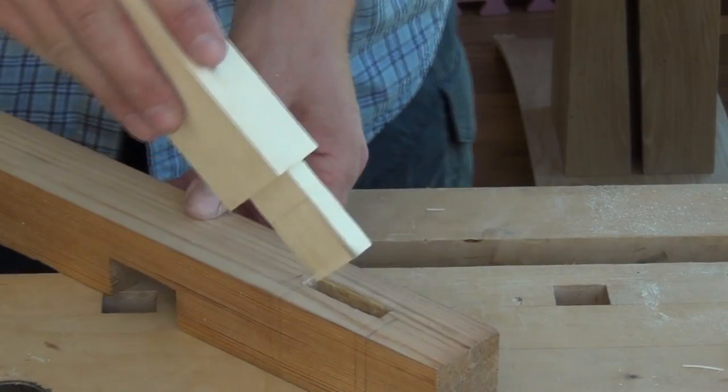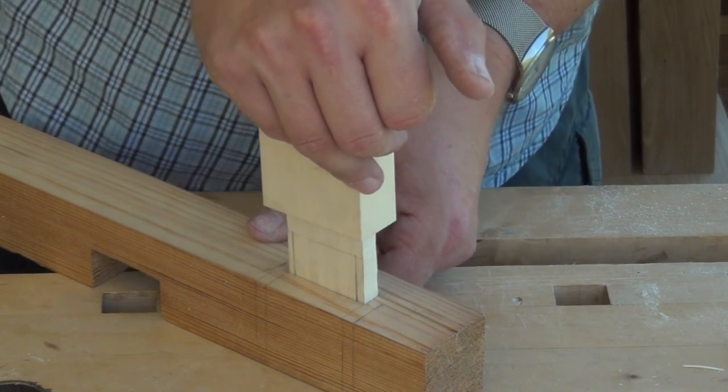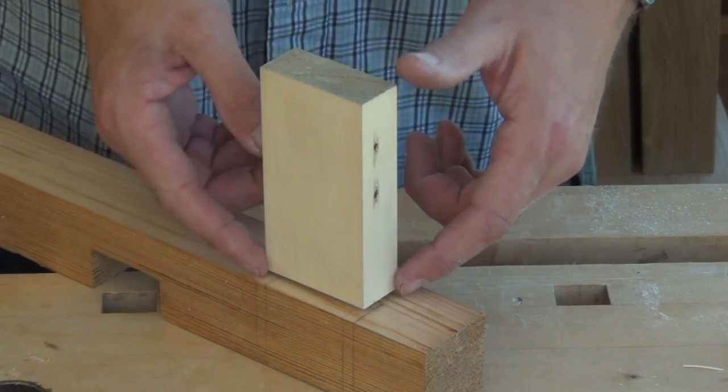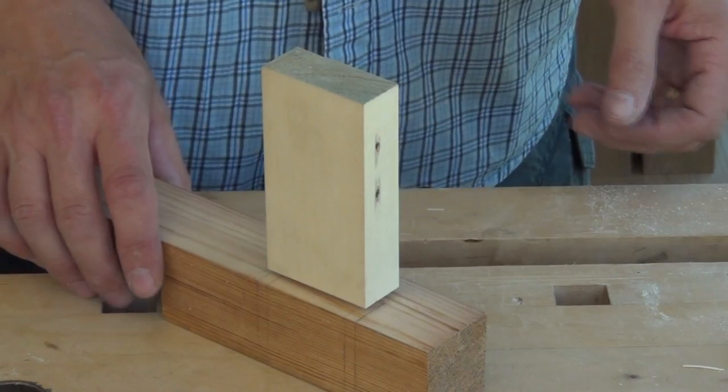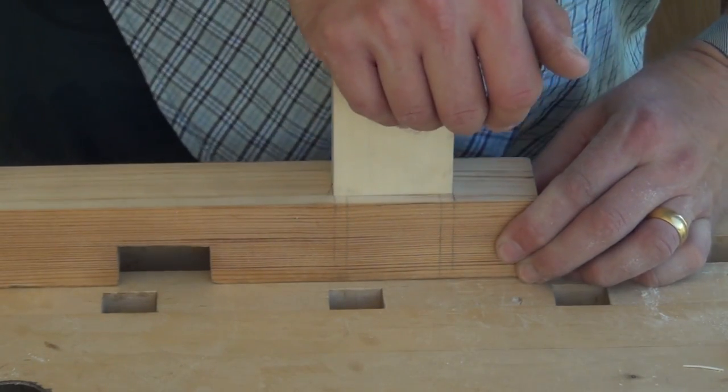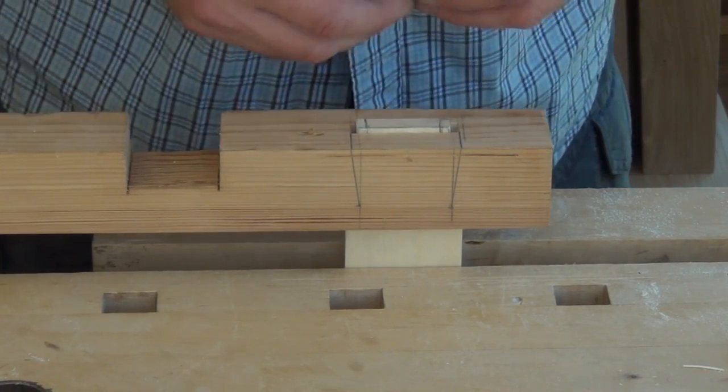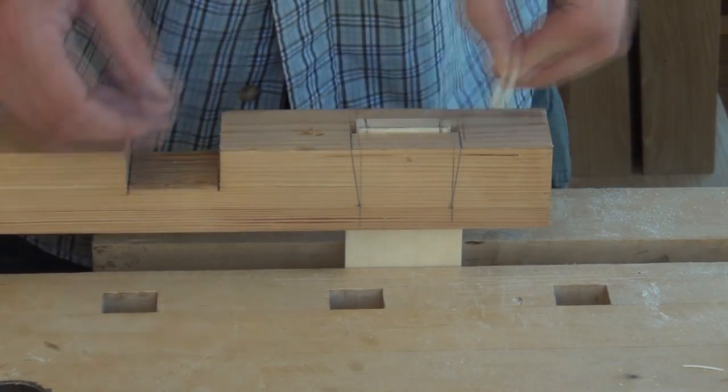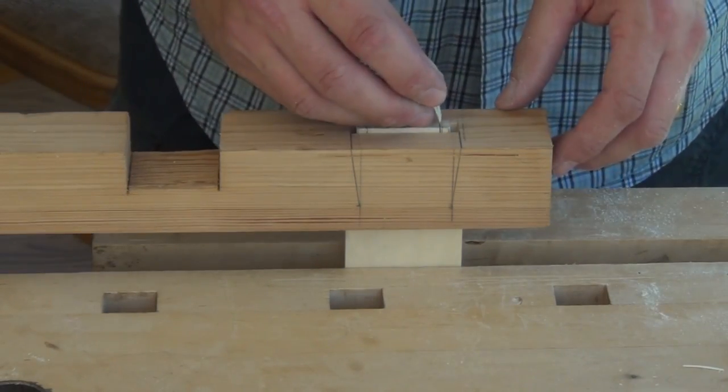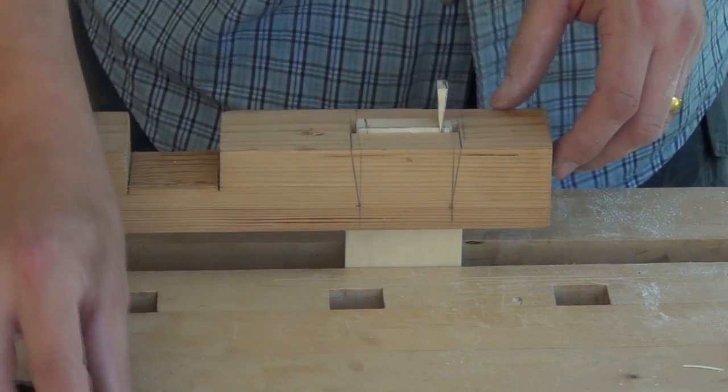Now we should be able to take our tenon and fit it directly into the mortise. The bottom's out obviously on the bench a little bit high because we made it that little bit longer. Just check our wedges are at least as thick as the gap at the end. Which they are. And they will get knocked home with some glue in like so.